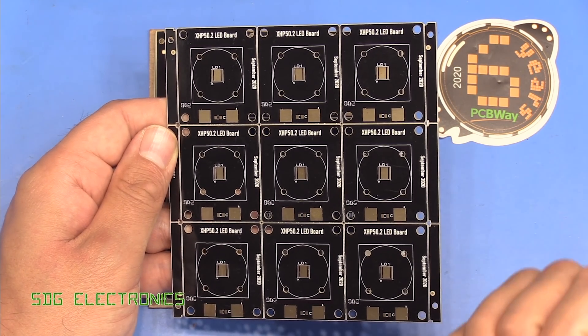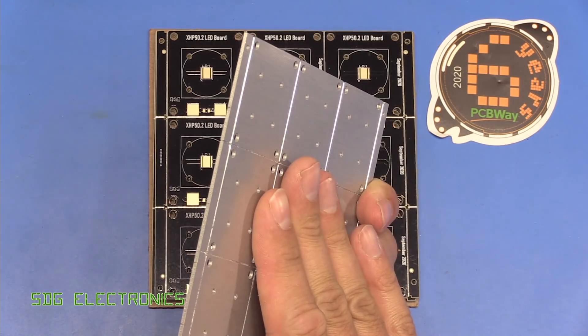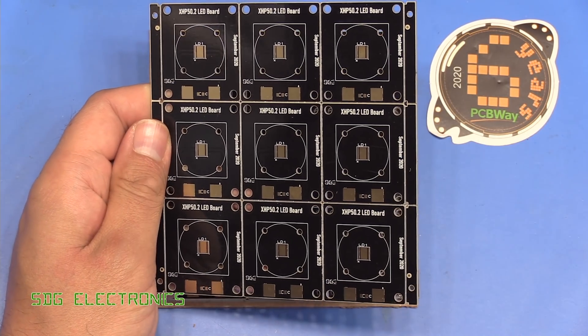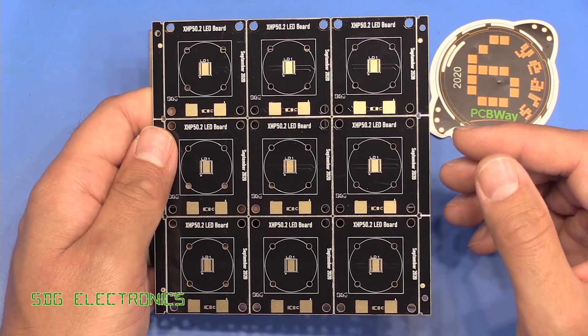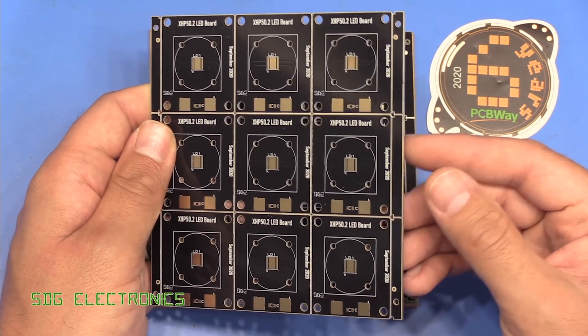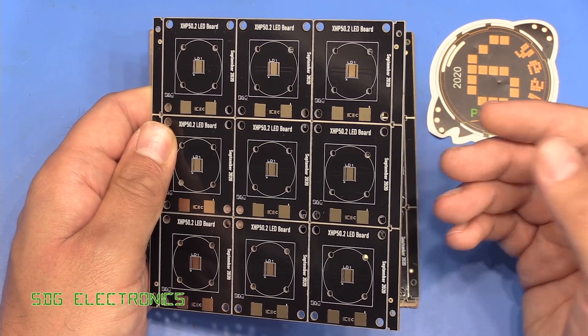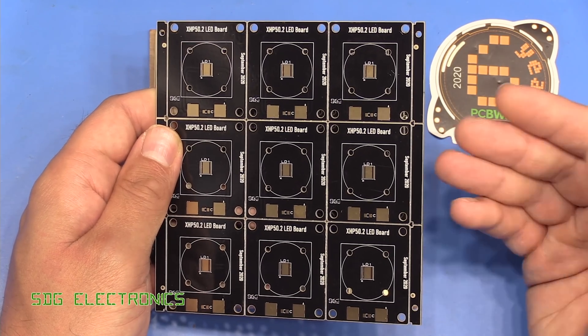And basically, when you've got the LED soldered to those, and then your heat sink placed on the back, you should get very good thermal conductivity all the way through. So I'm really interested today to see whether the added expense of having aluminium PCBs makes any difference whatsoever.